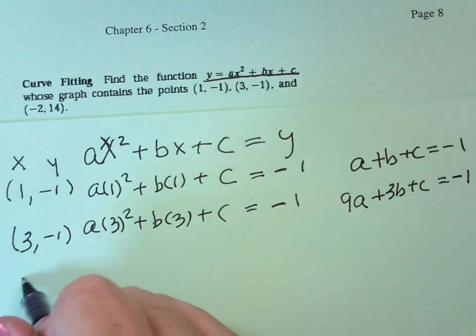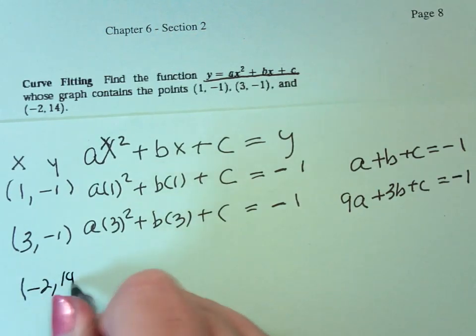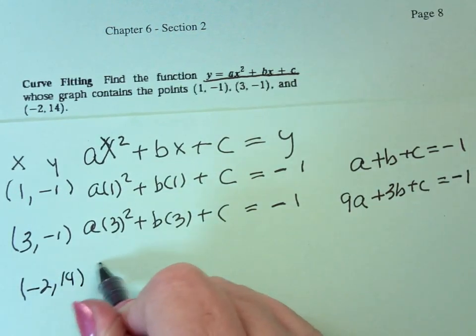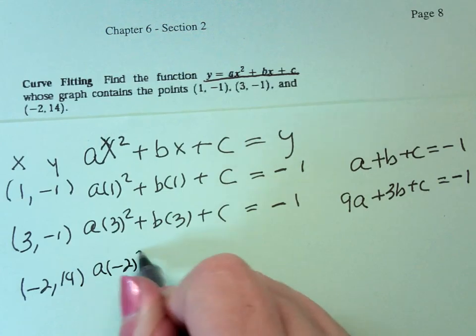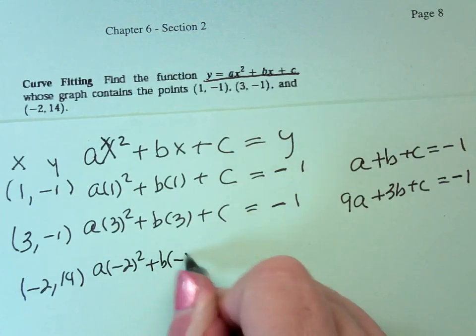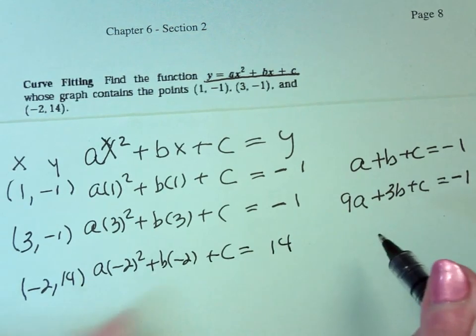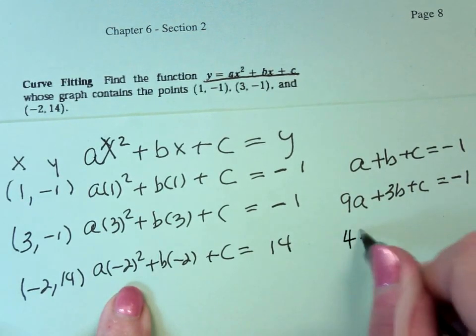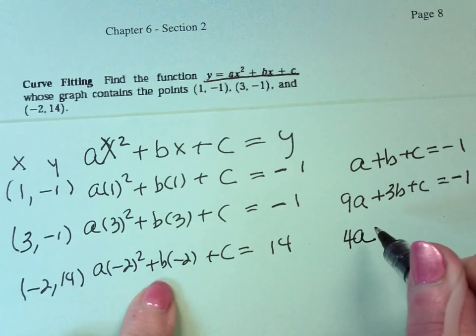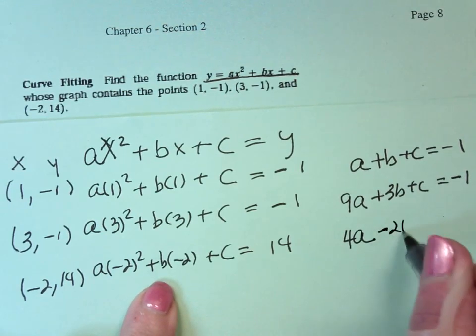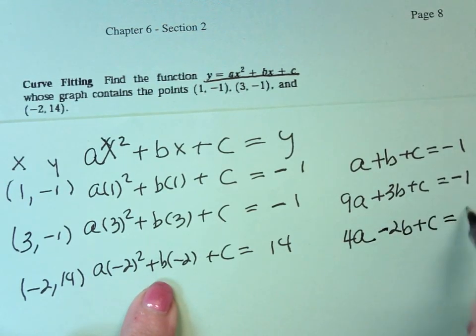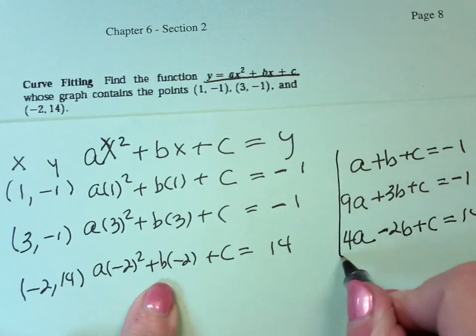And that if I have negative 2, 14, that a times negative 2 squared plus b times negative 2 plus c equals 14. Negative 2 squared is 4, negative 2 times b is negative 2b, plus c equals 14, and there's your system.